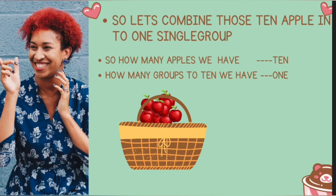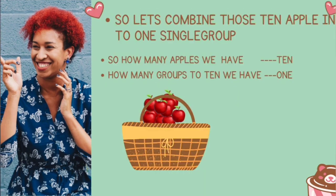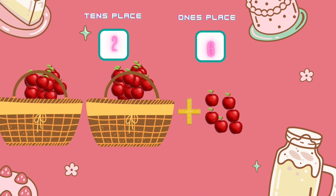In other words, we will use the new number place to keep track of how many groups of 10 apples we have picked. For example, if we picked only one group of 10 apples, we put digit 1 in the number place. If we picked two groups of 10, we put digit 2, and so on. Because this new number place counts groups of 10, we are going to name it the tens place.